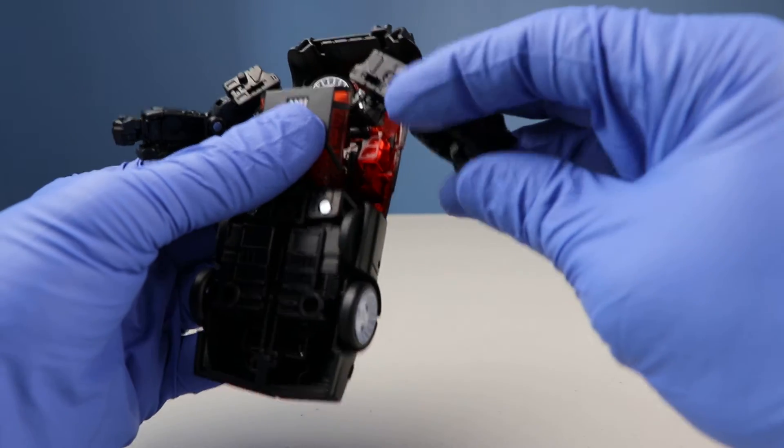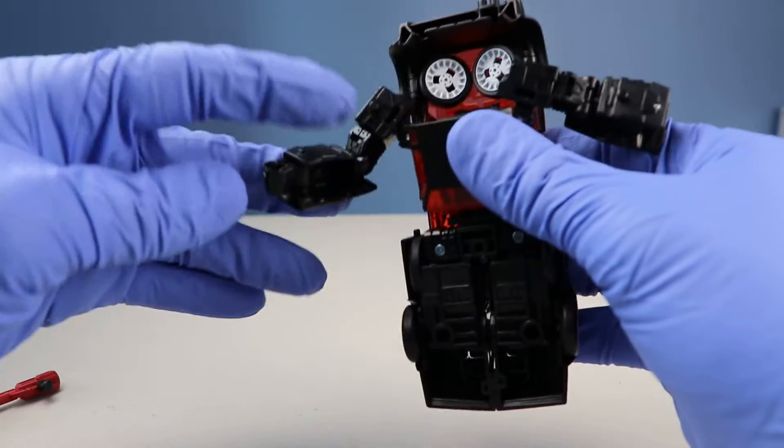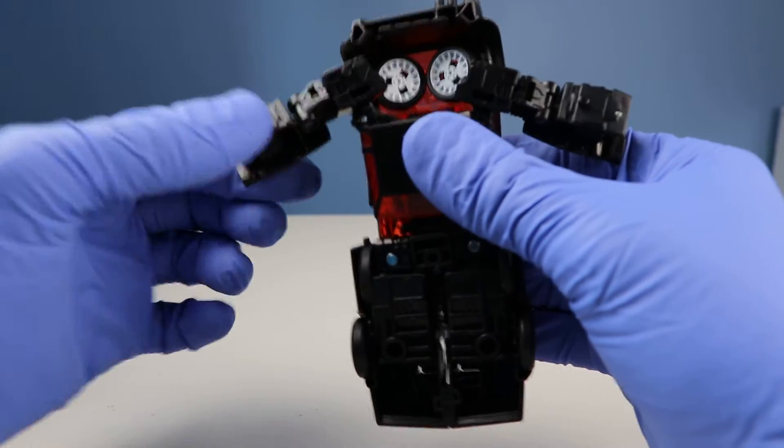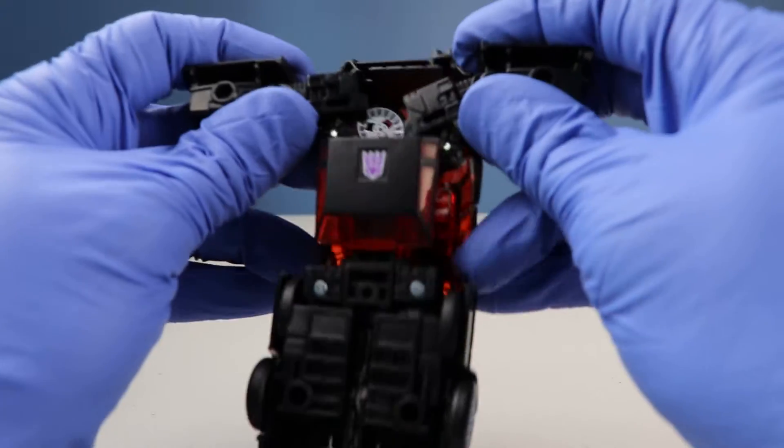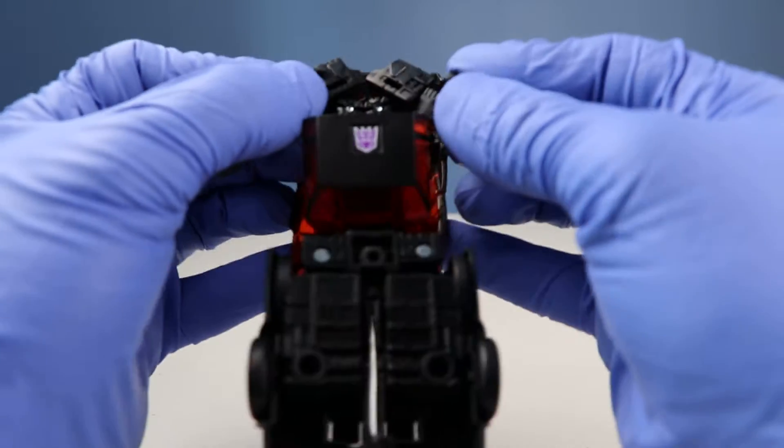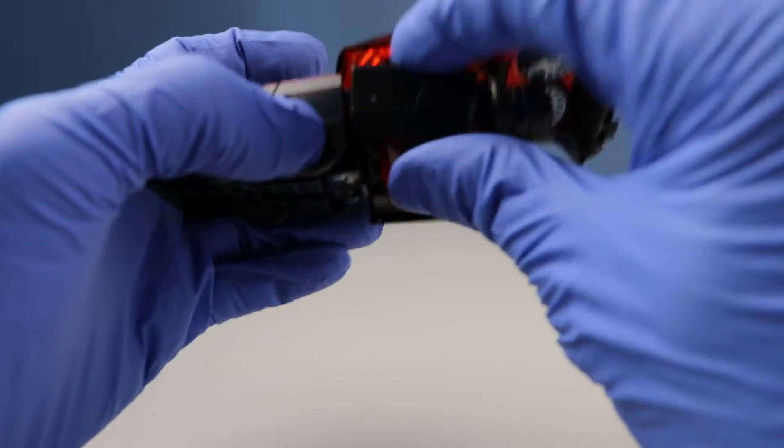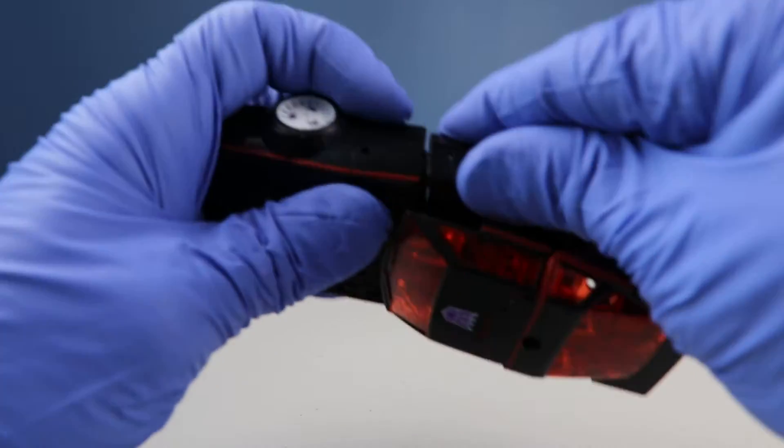For his arms, you can flip the fists in. Rotate the forearms, push the arms up and then fold them down nicely. And then these form the doors and they tab in here and here.